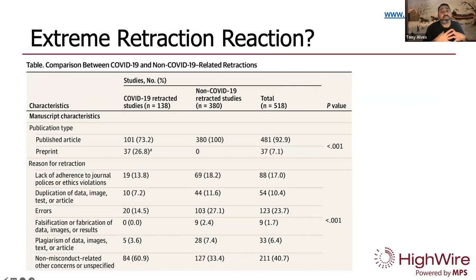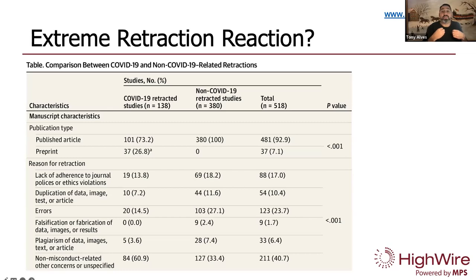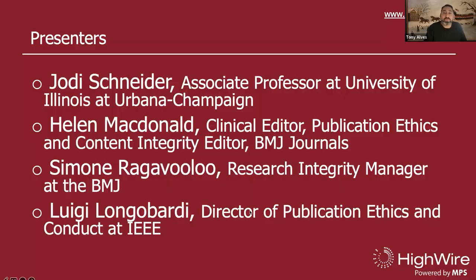This table compares COVID and non-COVID-related retractions, specifically reasons for retraction. One interesting data point is that COVID retractions tended to fall into the non-misconduct-related or unspecified category, and a higher percentage of COVID retractions tended to take place less than six months following publication than did non-COVID retractions. So people tended to do a much quicker retraction reaction. Let's now take a step back and turn to our experts for some useful practical advice on handling retractions.